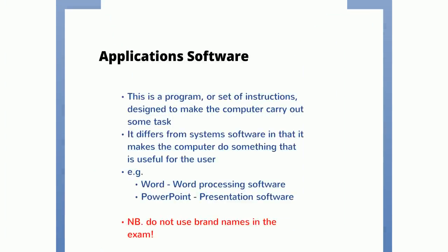Application software is a program or set of instructions designed to make the computer carry out a task. It differs from system software in that it makes the computer do something that is useful for the user. So we have word processing software, presentation software, database software, games — anything like that would be considered application software. Don't use brand names in the exam. If you're asked to give an example, don't say Word or PowerPoint — say word processing or presentation. Try and think of as many other different types of application software that you can.